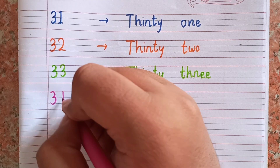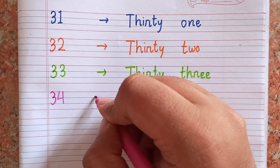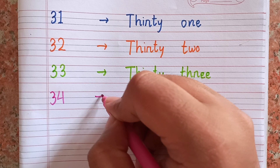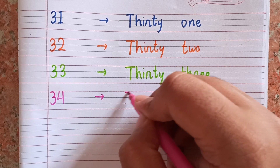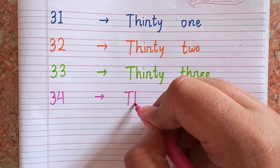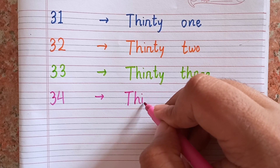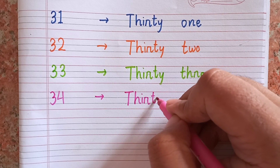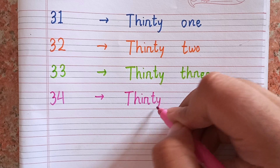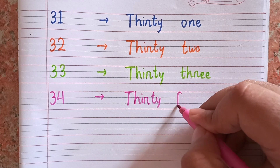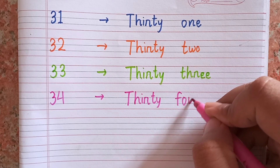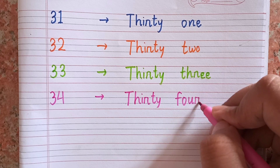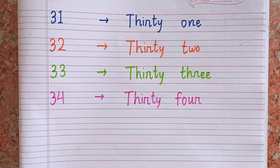After thirty-three, the next number is thirty-four — 3-4. The spelling of thirty-four is T-H-I-R-T-Y F-O-U-R. 34.